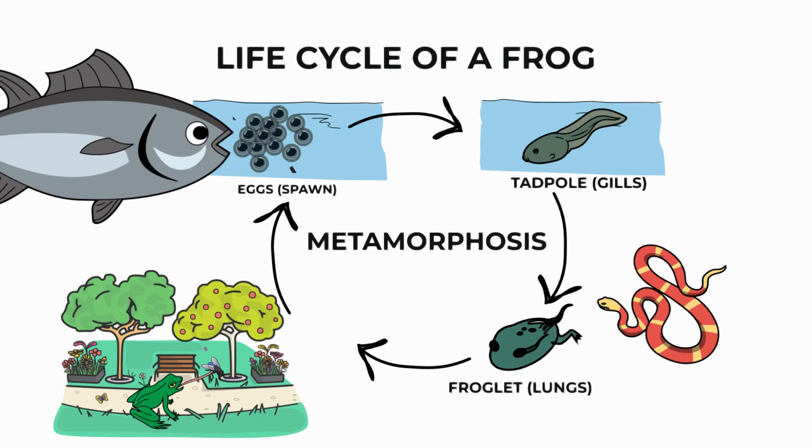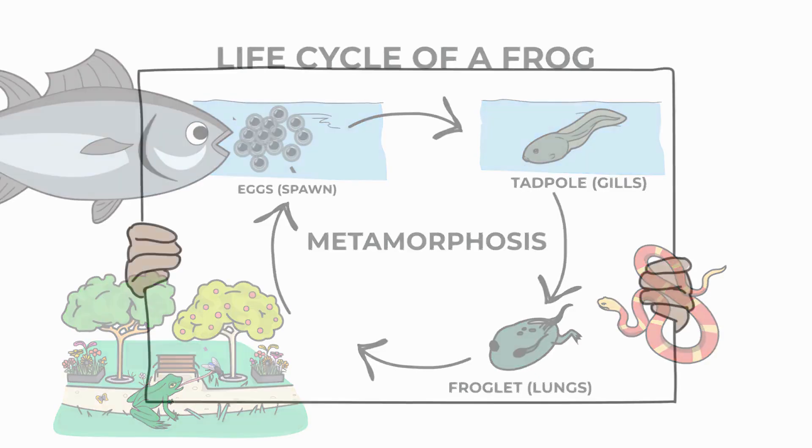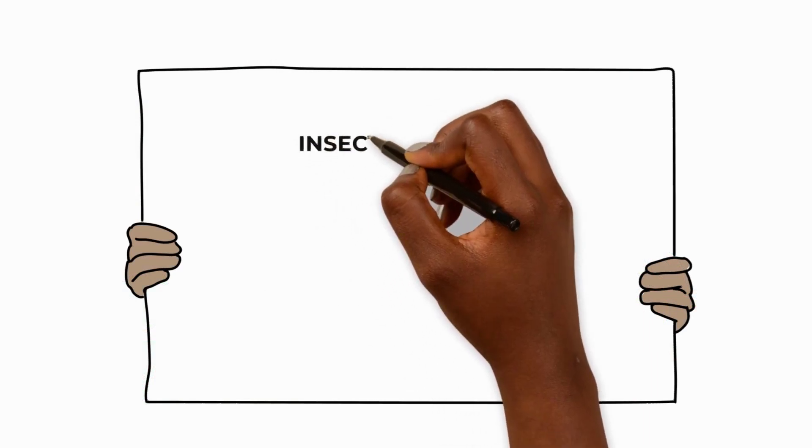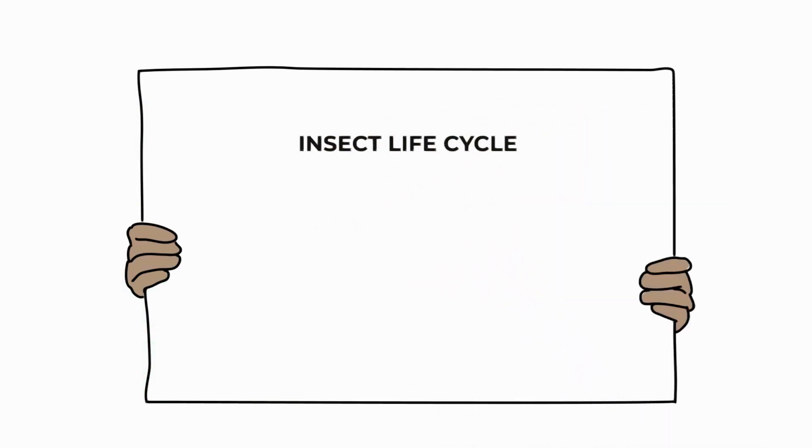That's it for amphibians, but there's another kind of animal that looks very different at various stages of its life cycle too. Let's move on to the insect life cycle. Have you ever seen a butterfly emerge from its cocoon? Do you know what happens inside? Keep watching to find out and learn all about the fascinating world of insect life cycles.